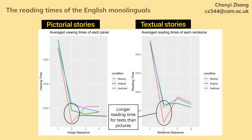As for the reading times, the results were even more interesting. These two graphs present the reading time of the English monolinguals of the bridging event panel. On the graph to the left, which is the reading time of the pictorial information, the reading time in the original condition — which is the picture — was significantly shorter than that in the switched condition — which is the sentence. And this cannot be explained purely by the surprising effect, as on the graph to the right, when the stories had a text context, there's no difference in the results.